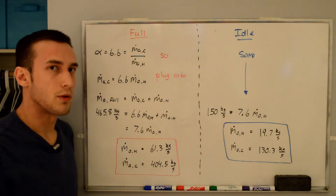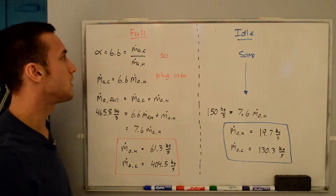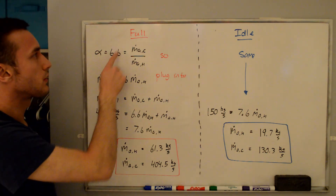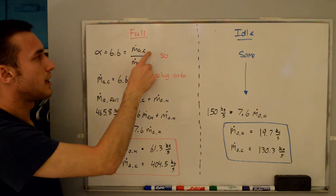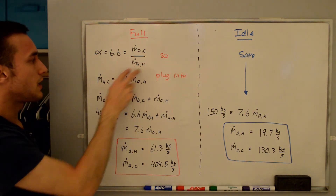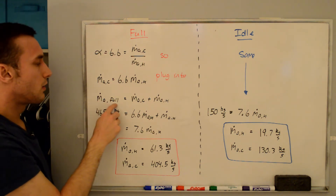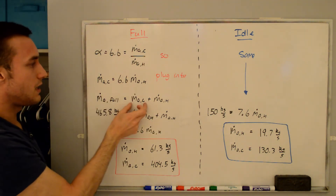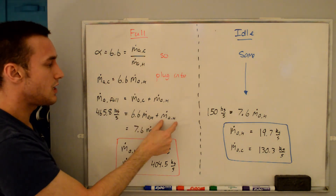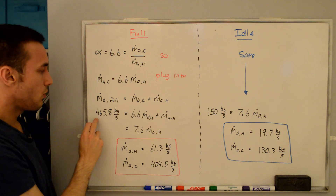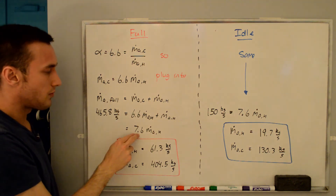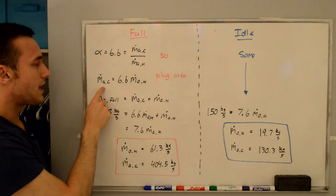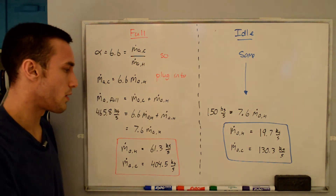You might have noticed I mentioned the mass flow rates of the core and bypass but haven't given numbers yet — we can solve for them using the bypass ratio alpha and the total air mass flow rate. Alpha equals 6.6, which by definition equals m_AC over m_AH. Multiplying both sides by m_AH gives m_AC = 6.6 × m_AH. Since M_A full equals m_AC plus m_AH, substituting gives 7.6 × m_AH = 465.8 kg/s, so m_AH equals 61.3 kg/s and m_AC equals 404.5 kg/s for the full thrust case.